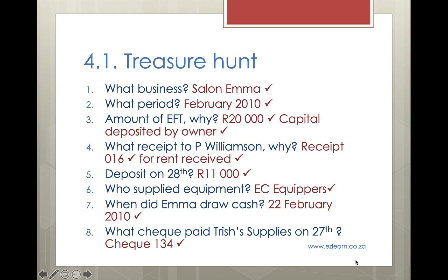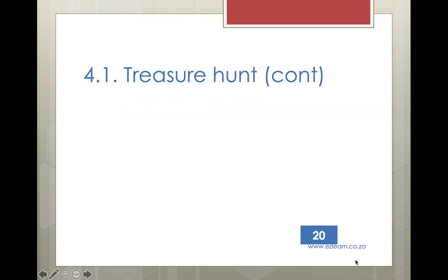Question 9: What was the cost of the land and buildings owned by this business? The cost is R150,000 Rand. You would see this by looking in the general ledger to find how much land and buildings are owned at this time. There is no entry in the cash receipts or cash payments journals, so you need to look at the general ledger.